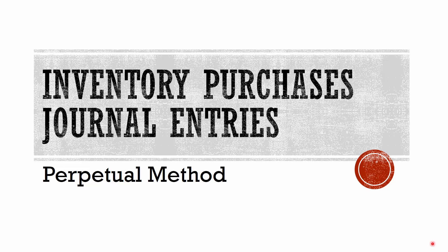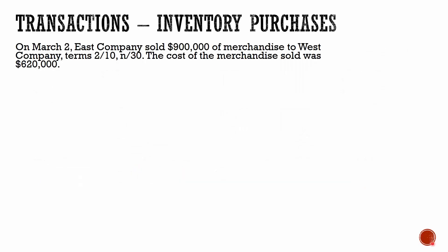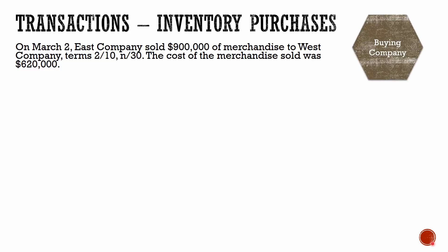Let's review the journal entries for the purchases of inventory under the perpetual method. On March 2nd, East Company sold $900,000 in merchandise to West Company, terms 2/10, net 30. Now we are doing the purchasing side of the journal entries, so we are West Company here, and we're doing our journal entries from the perspective of West Company.